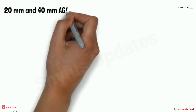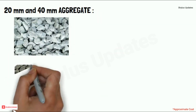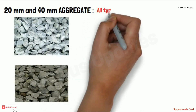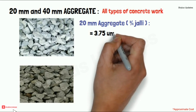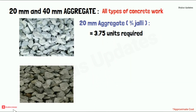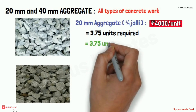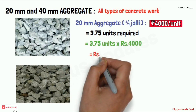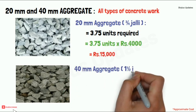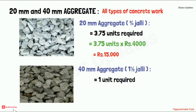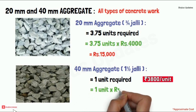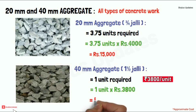20 mm and 40 mm aggregates are used in all types of concrete work. For a 250 square feet house, 3.75 units of 20 mm aggregate are required at rupees 4,000 per unit, giving rupees 15,000. For 40 mm aggregate, 1 unit is required at rupees 3,800 per unit, giving rupees 3,800.